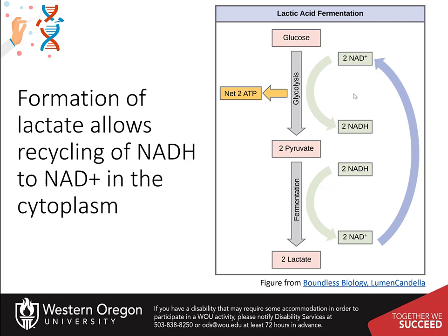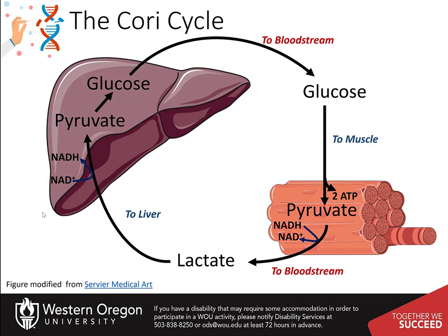In the process, if anaerobic respiration occurs within muscle tissue, the muscle will need to offload the lactate into the bloodstream so that it can keep recycling the NADH to NAD. The lactate is then taken up by the liver, where it can be converted back into pyruvate and utilized in the gluconeogenic pathway if needed. This is known as the Cori cycle.